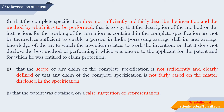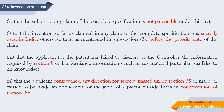Ground J: The patent was obtained on false suggestion or representation. Ground K: The subject of any claim of the complete specification is not patentable under this Act — that is, it falls under Section 4. Ground L: The invention claimed in any claim of the complete specification was secretly used in India, otherwise as mentioned in Subsection 3, before the priority date of the claim.